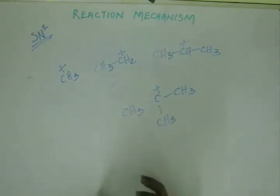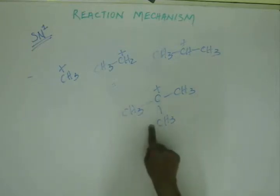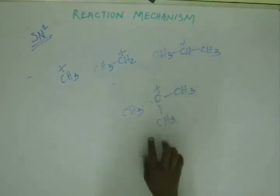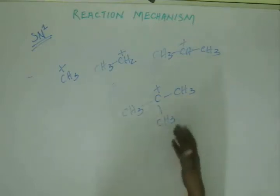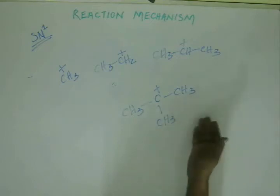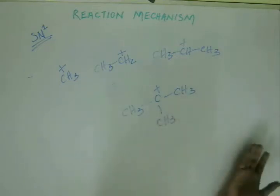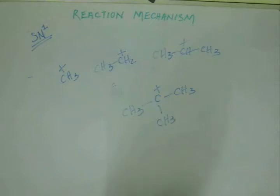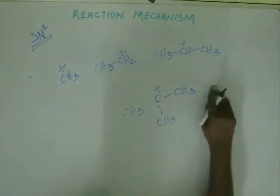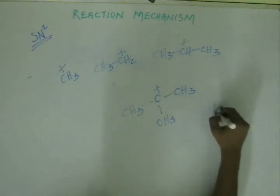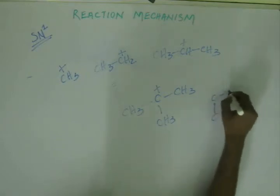When the degree of carbon increases, the SN1 rate increases because there are more stabilizing effects. The rule is: the more stable the carbocation, the greater the rate of reaction. As degree increases, there are more hyperconjugating structures and more inductive effect, hence greater stability. However, in some cases this rule may prove to be futile or even misleading.